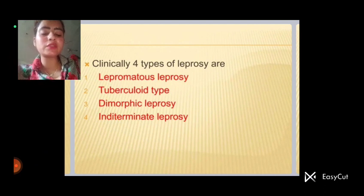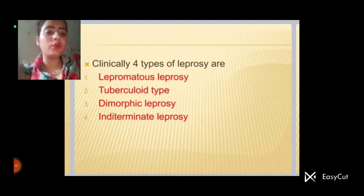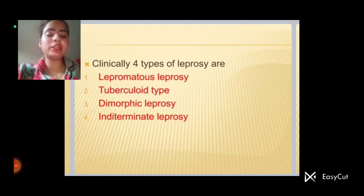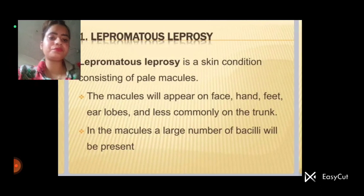Clinically, four types of leprosy are: first one, lepromatous leprosy; then tuberculoid type; then dimorphic leprosy and intermittent leprosy.